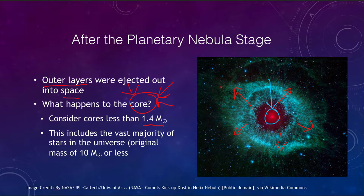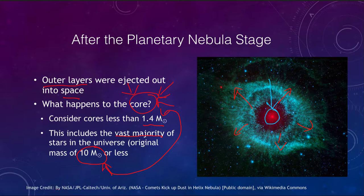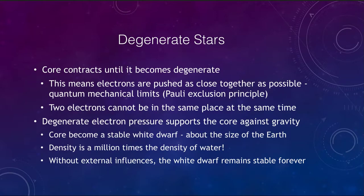This 1.4 solar mass limit is very important and has to do with the stability of the remnant left behind. Anything more than 1.4 solar masses, something different is going to happen, and we will look at that later on. This limit encompasses the vast majority of stars in the universe — stars with 10 solar masses or less will be able to lose enough material that the remnant left behind will be under this 1.4 solar mass limit. Now let's look at what we mean by a degenerate star.